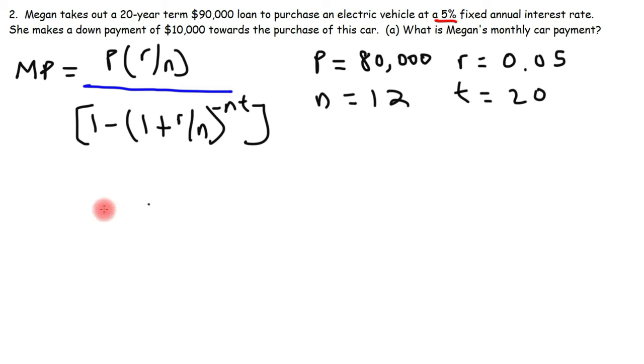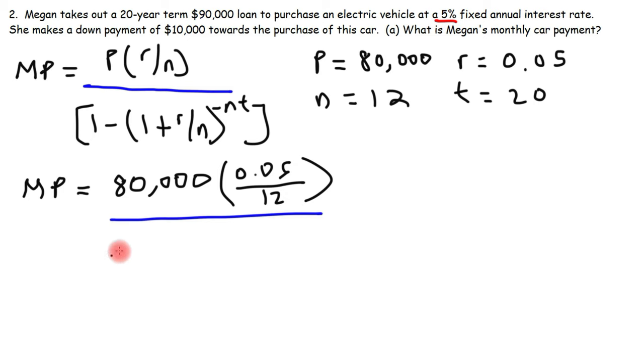Now let's go ahead and plug in everything into this formula. So we're going to have 80,000 times r - r is 0.05 - divided by 12, all divided by 1 minus (1 plus r/n) raised to the negative nt. So n is 12, t is 20.